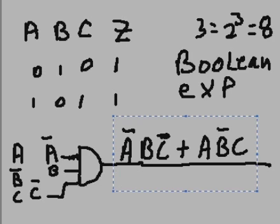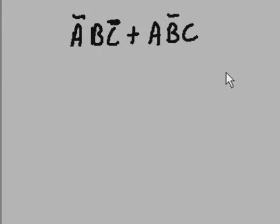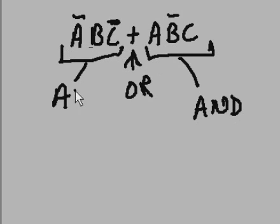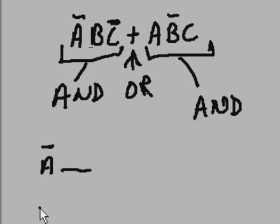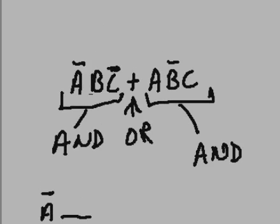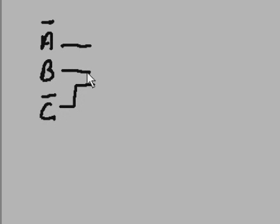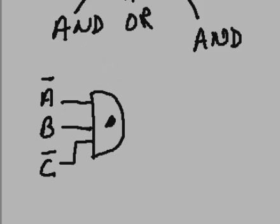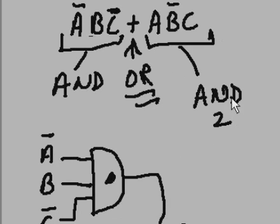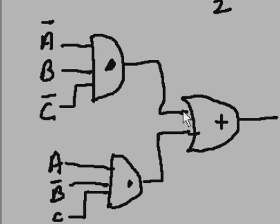Now I want to take this Boolean expression and build my circuit. The circuit is going to have an OR gate, an AND gate with three inputs, and another AND gate with three inputs. The first AND gate takes A-not, B, and C-not. The second AND gate takes A, B-not, and C. The outputs of both AND gates feed into the OR gate. And there is our circuit.